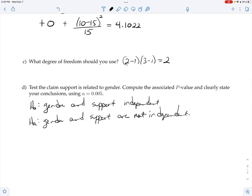At this point, compute the probability that chi-squared with 2 degrees of freedom is greater than or equal to 4.1022. You should get about 0.12859.